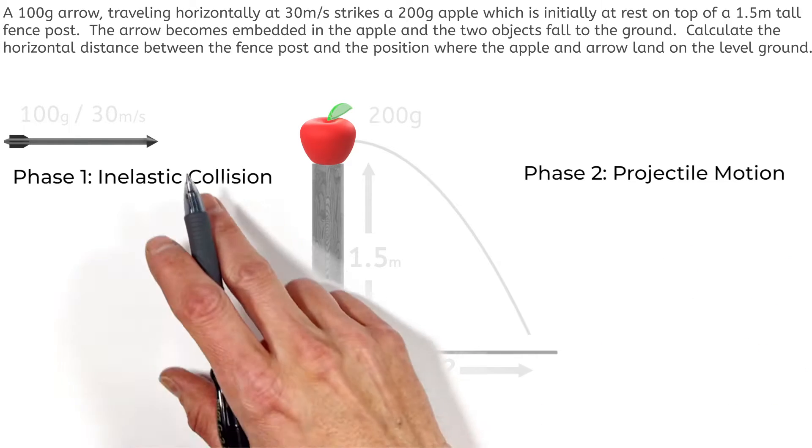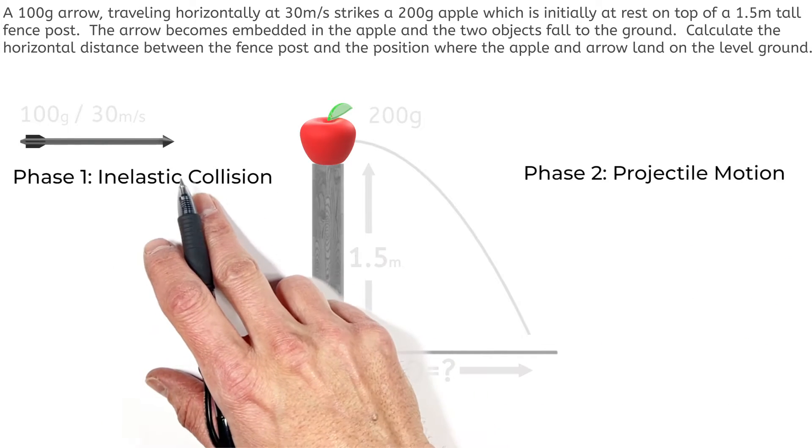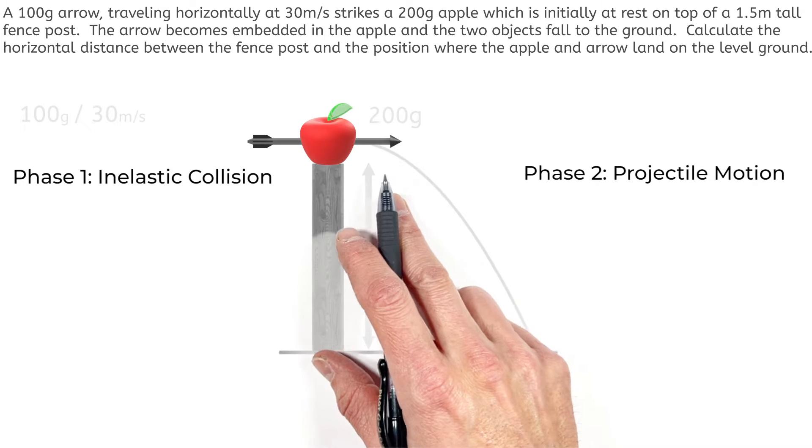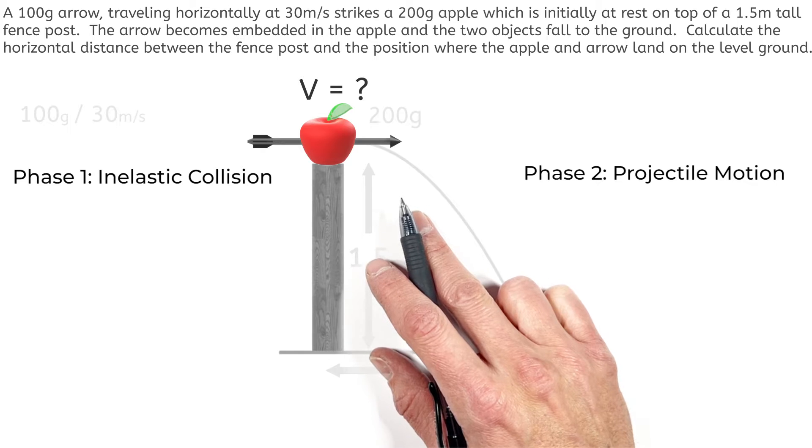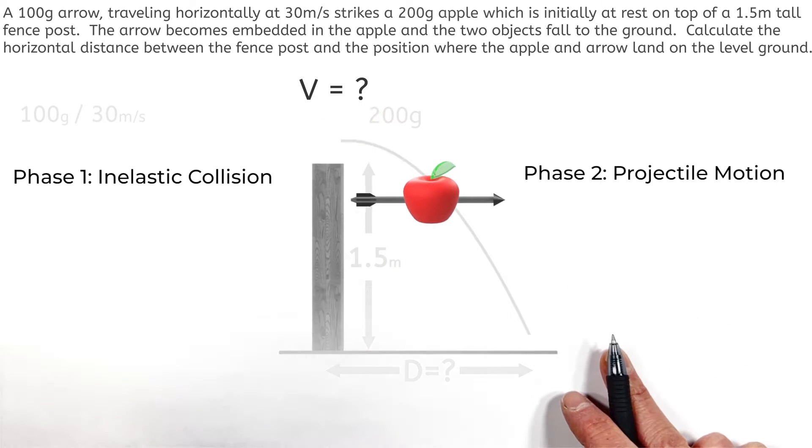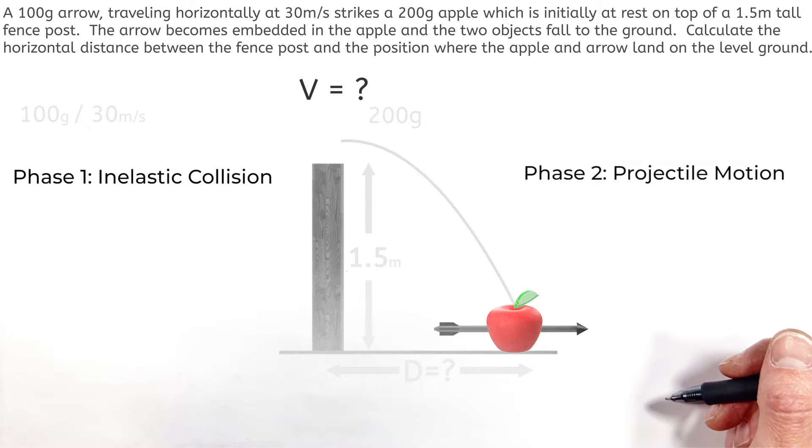You see, really what we're going to do here is look at this collision to find out the velocity of the apple and arrow just after this collision, which we're then going to use as the initial velocity of the apple and the arrow as they travel in projectile motion down to the ground here.